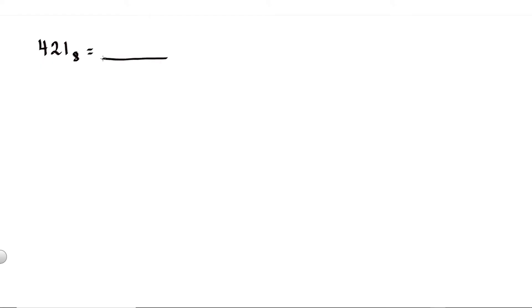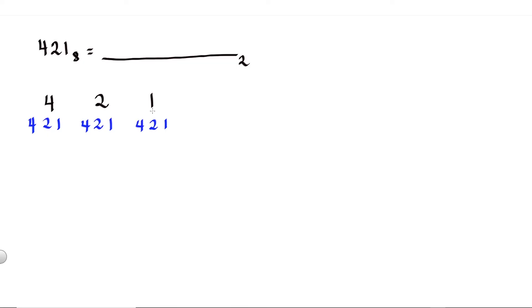For our third example, we are going to convert 421 octal into binary. Again, write the number with enough space in between — so 4, 2, and 1. For each digit we have positions: 1, 2, and 4. Since 1 is the sum of 1 and zero, 2 is the sum of 2 and zero, and 4 is the sum of 4 and zero. For digit 4: we use 4, so this is 1; we don't use 2 and 1, so these are 0.